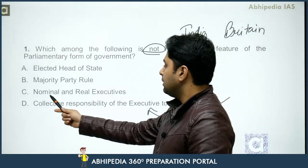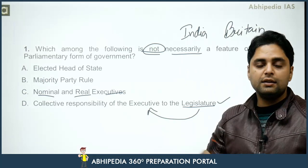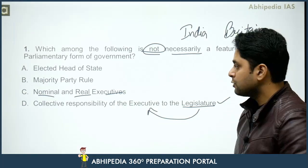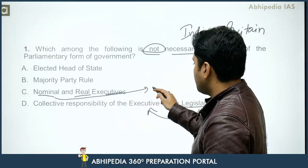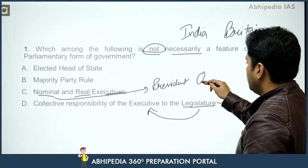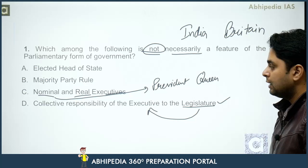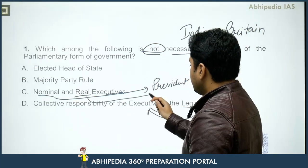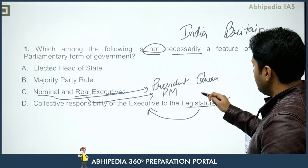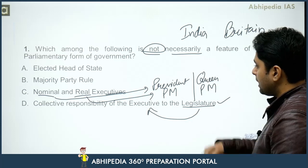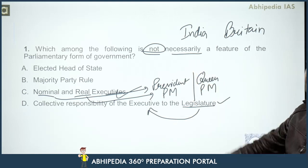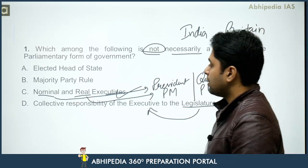Nominal and real executive: kya executive mein yeh classification hai ki ek nominal, yaani naam ka executive hai aur ek asal mein executive hai? In India, we have a nominal executive in the form of the president. In Britain, the nominal executive is the Queen of England. Real executive in India at the union level is the prime minister, and in Britain there is also a prime minister. So nominal and real executive is again a feature of parliamentary form of government - yeh bhi 'not necessarily' wale category mein nahi aata.